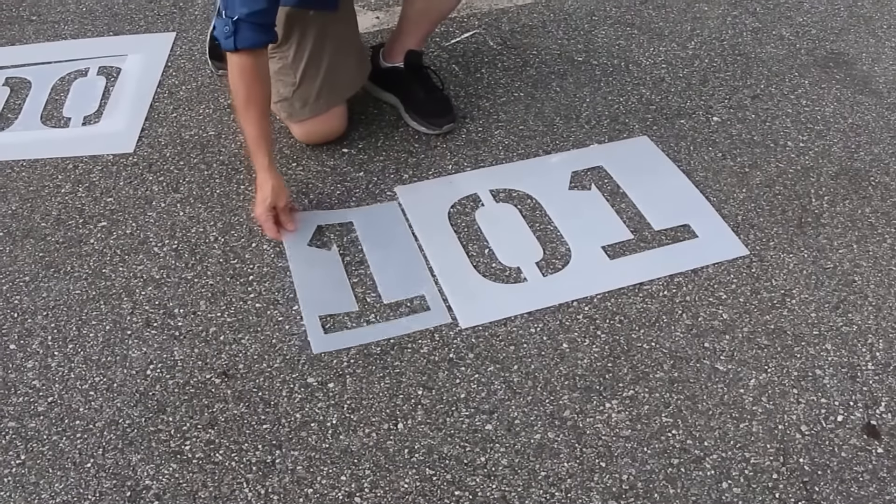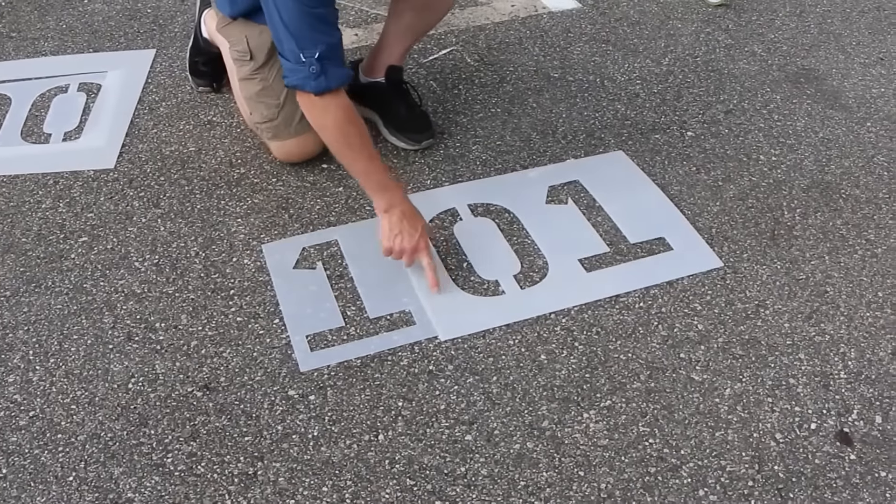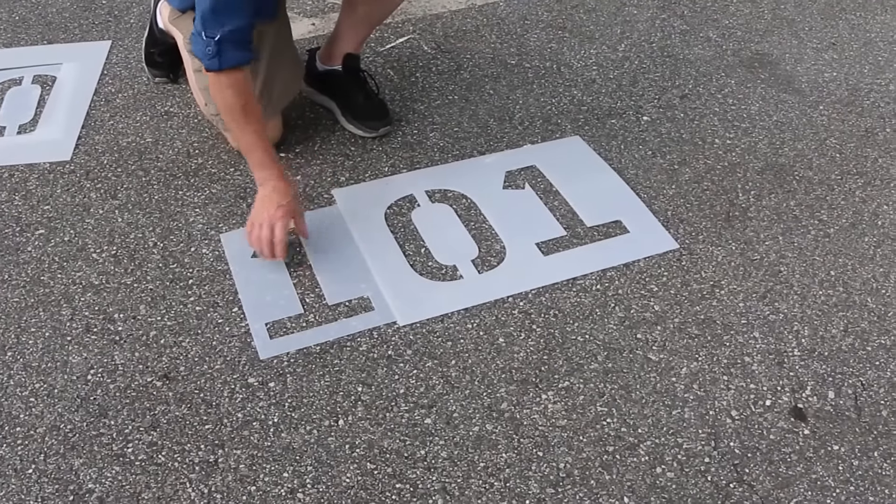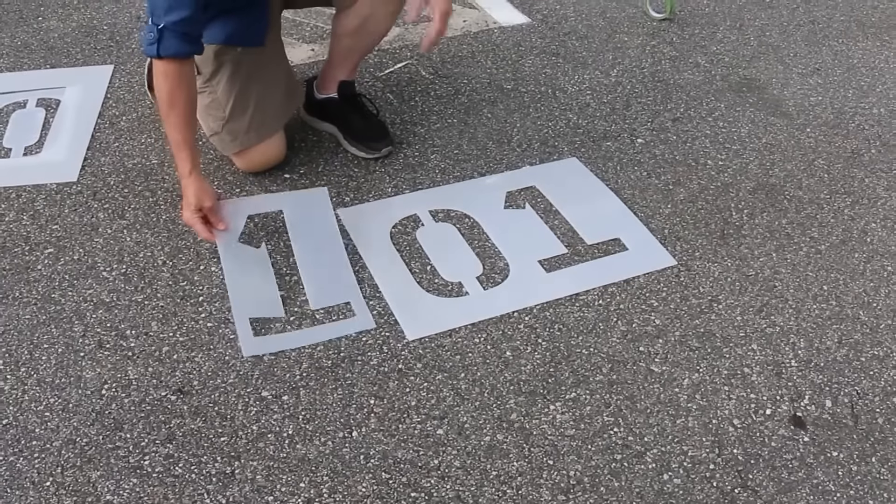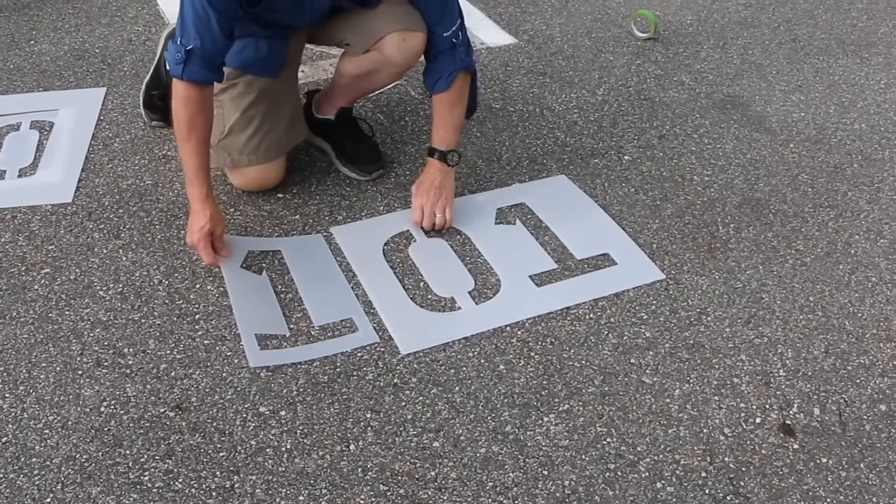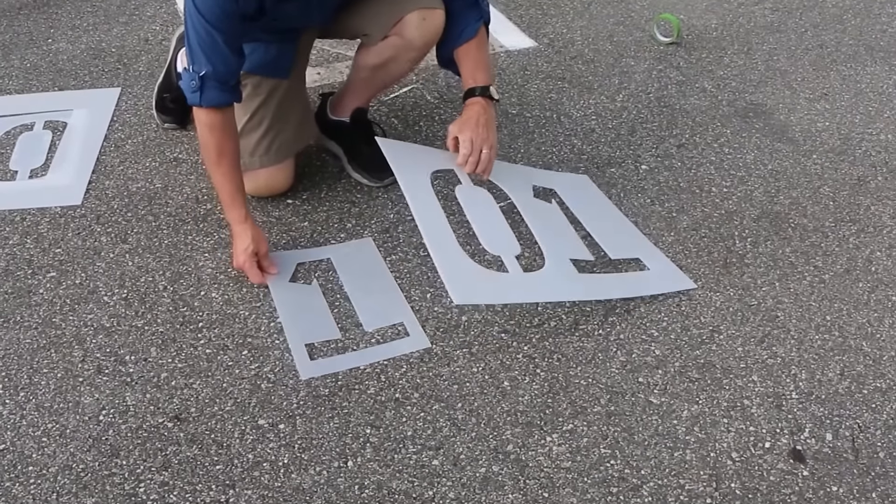For those parking lots with 100 or more spaces, adding a third number can be cumbersome and time-consuming. The third digit often needs to be painted separately to avoid overlapping or oversized gaps between numbers.